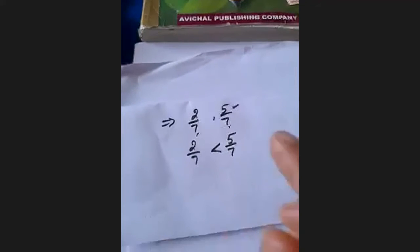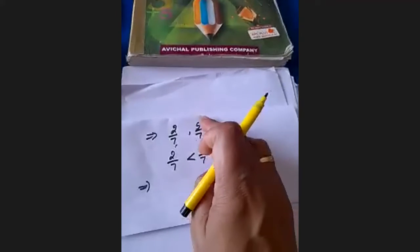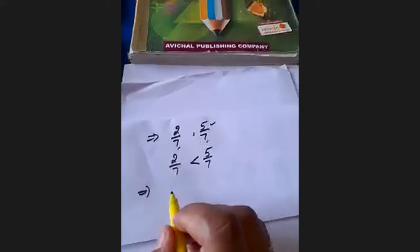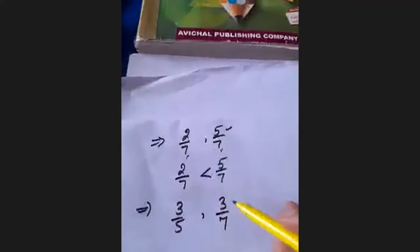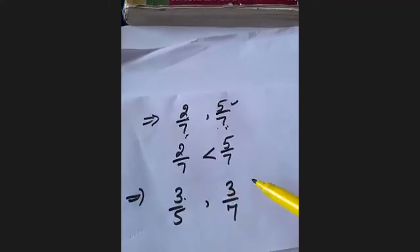The second case is when the denominator is different but the numerator is equal. Let us consider two numbers: 3 upon 5 and 3 upon 7. In this example, you can see our numerator is the same — 3 and 3.